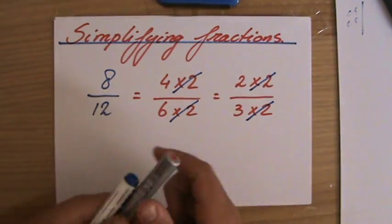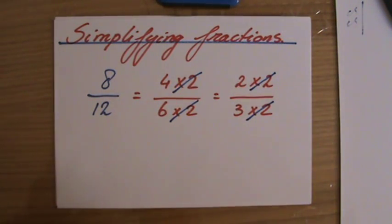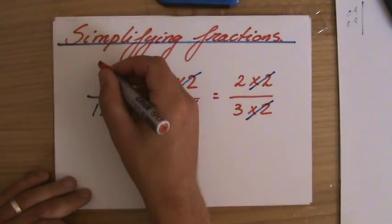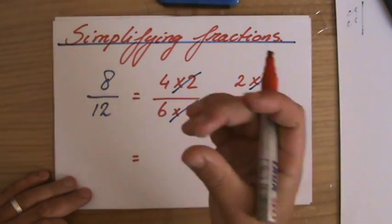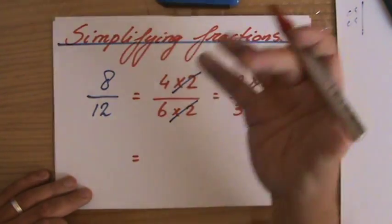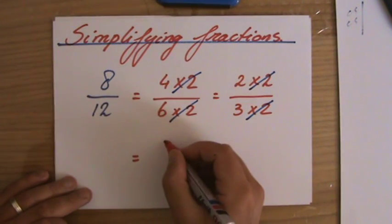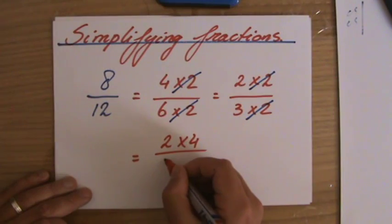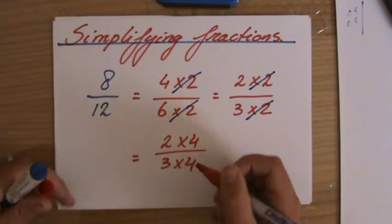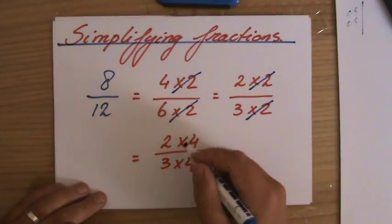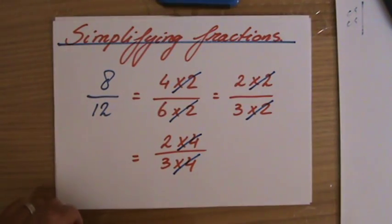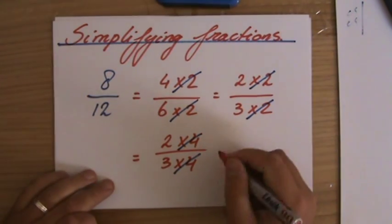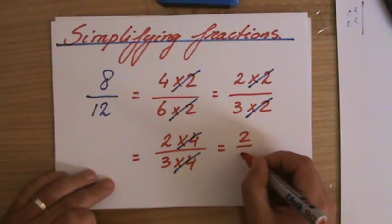But perhaps you are a little bit smarter than I am and you would have seen, or perhaps you saw: well, 8 over 12 - they share a factor 4. So you take out the factor 4 straight away, because you say well, 8 is 2 times 4 and 12 is 3 times 4. So I take out the common factor 4. So the simplest form I can write this fraction in is 2 over 3.